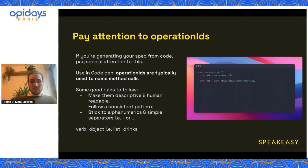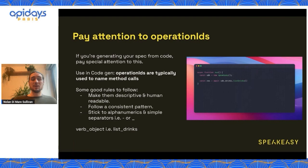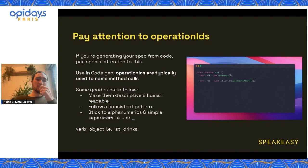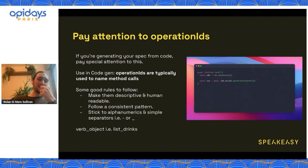Operation IDs are unique values that get added to each operation or each method in the spec. If you're not using CodeGen, they're not really used for anything — it's just supposed to be a unique identifier. I've seen people go so far as to give these a SHA-256 hash just to ensure uniqueness. That kind of makes sense, but if you're doing CodeGen, it's probably going to be the case that the operation ID gets used to create some sort of a method name. While a SHA-256 hash is great for ensuring uniqueness, it's really poor if it's going to be used as a method name.